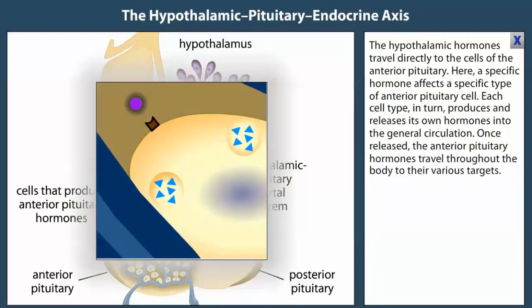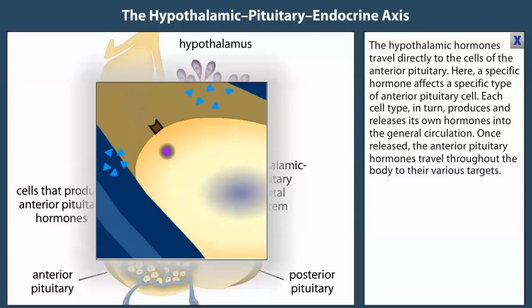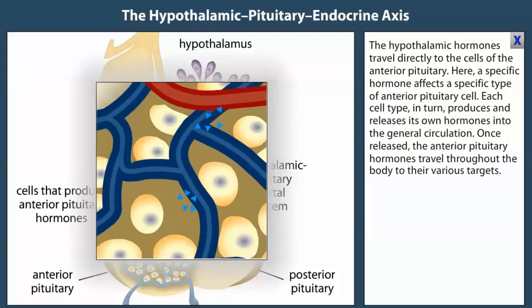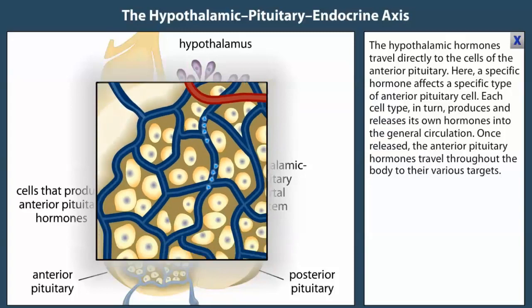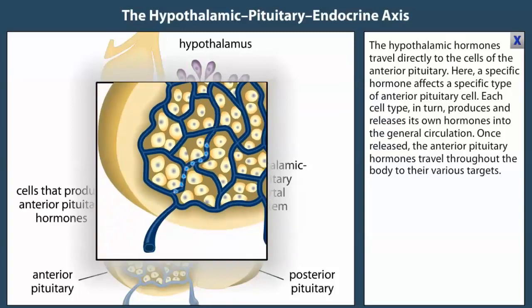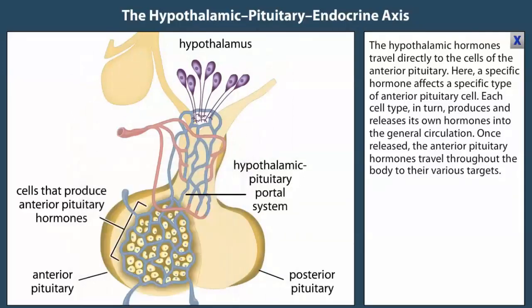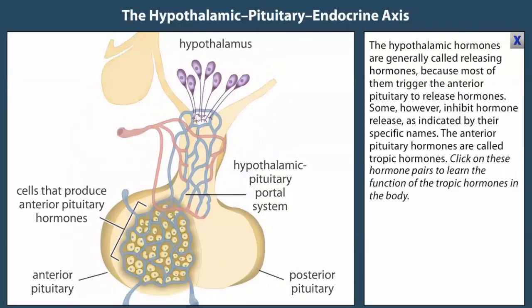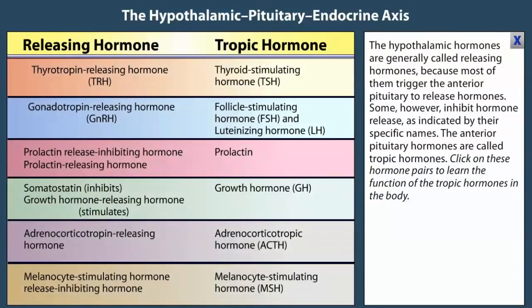Each cell type, in turn, produces and releases its own hormones into the general circulation. Once released, the anterior pituitary hormones travel throughout the body to their various targets. The hypothalamic hormones are generally called releasing hormones, because most of them trigger the anterior pituitary to release hormones. Some, however, inhibit hormone release, as indicated by their specific names.